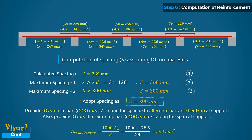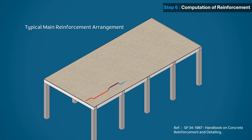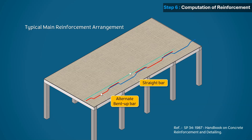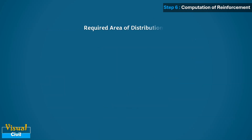Let us see the main bar arrangement in a three-dimensional diagram. The main steel bar arrangement in all spans is shown in this animation. In the next step, let us determine the required area of distribution steel.